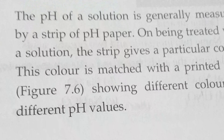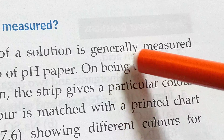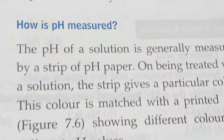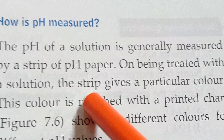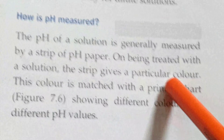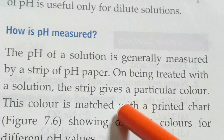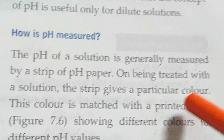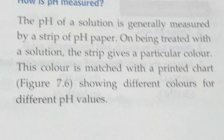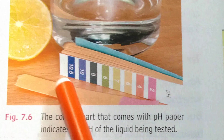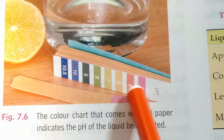How is pH measured? The pH of a solution is generally measured by a strip of pH paper. On being treated with a solution, the strip gives a particular color. This color is matched with a printed chart showing different colors for different pH values. Each different color shown on the chart corresponds to a specific pH value.